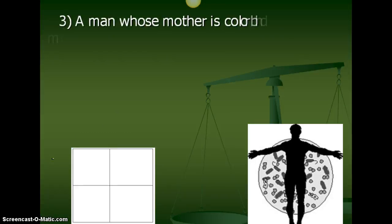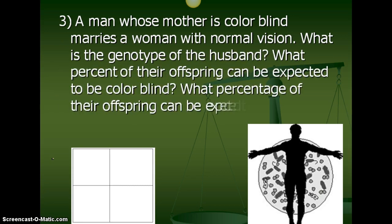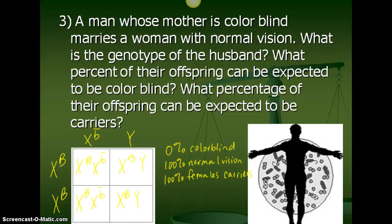Problem three: a man whose mother is color blind marries a woman with normal vision. We're going to give her X big B, X big B. The man whose mother is color blind had to get the little b from his mom and the Y from his dad. What percent of their offspring can be expected to be color blind, and what percentage can be expected to be carriers? Take the time to pause and fill in the work. The answer: 0% will be color blind, so 100% will have normal vision. But 100% of the females will be carriers of the trait.